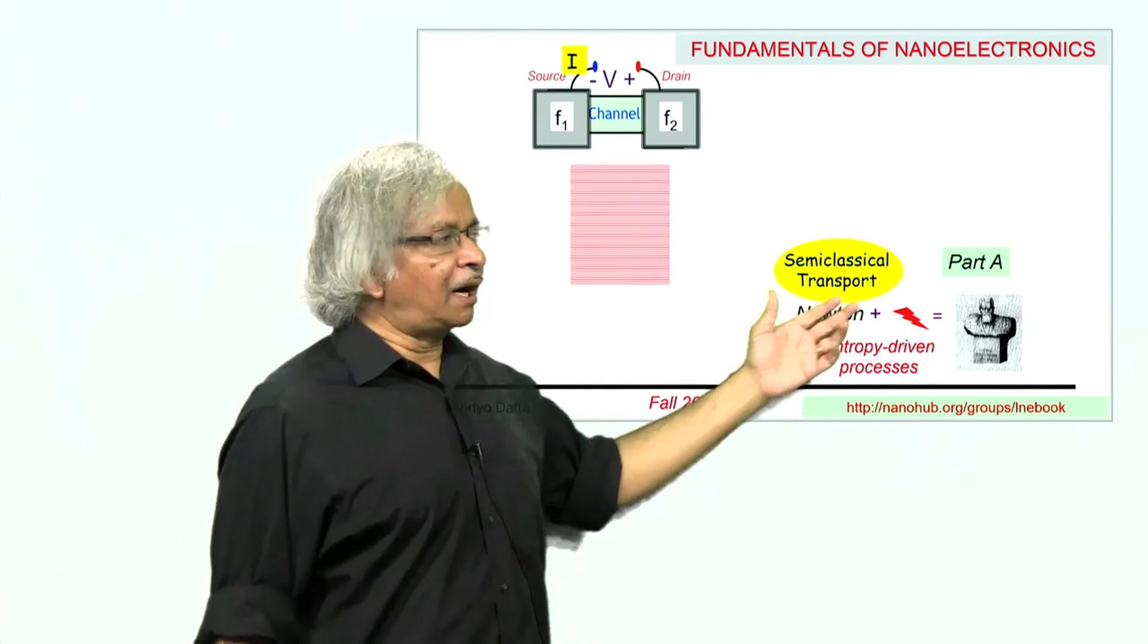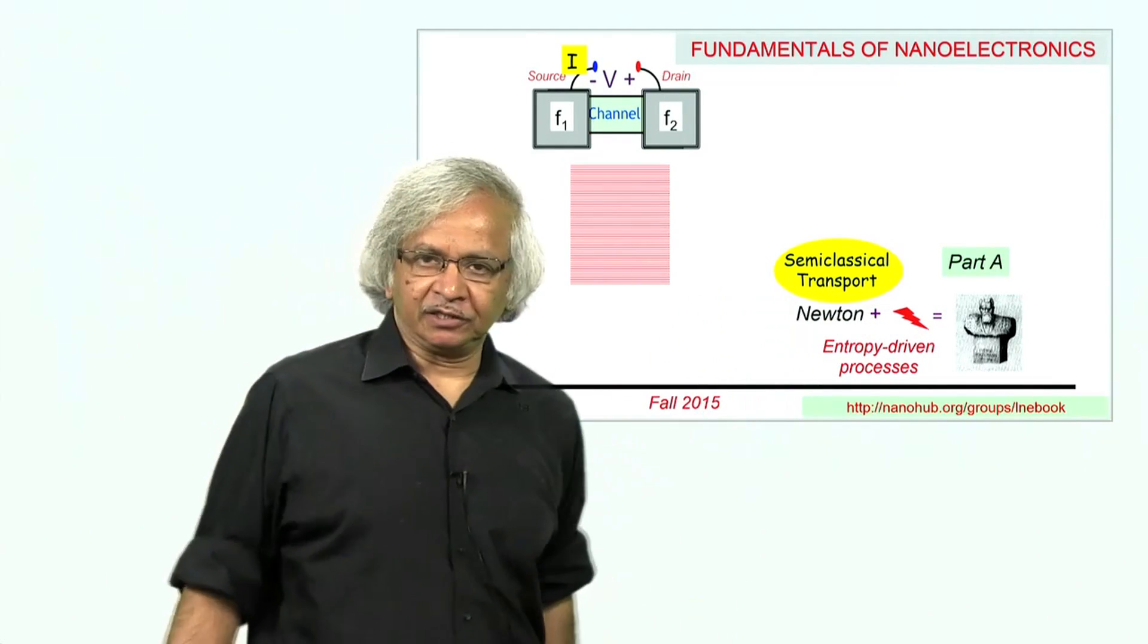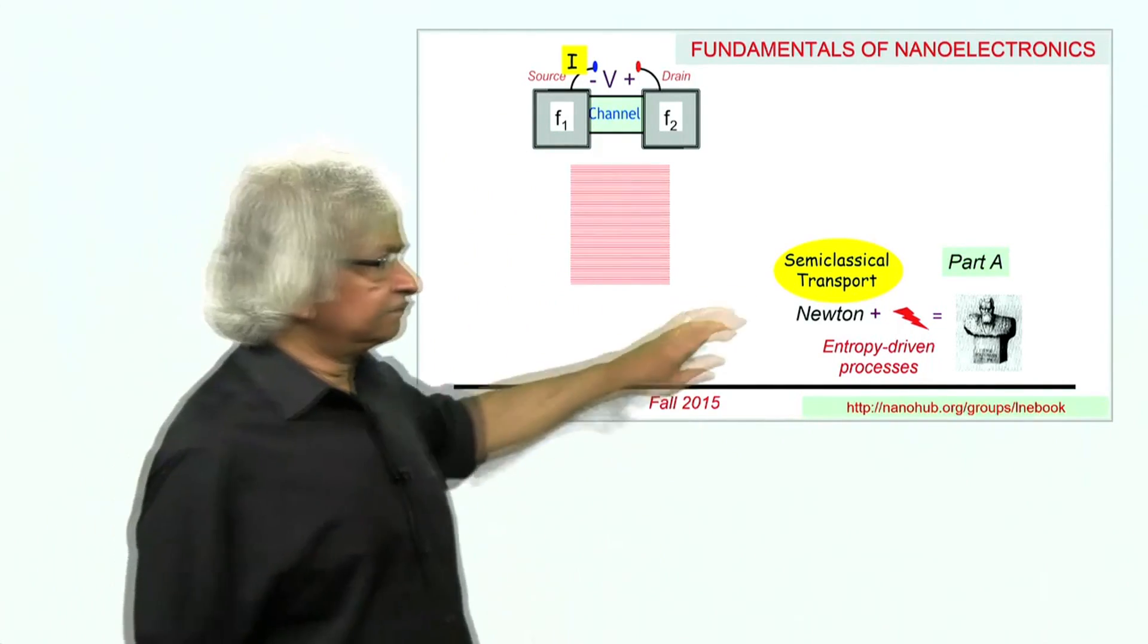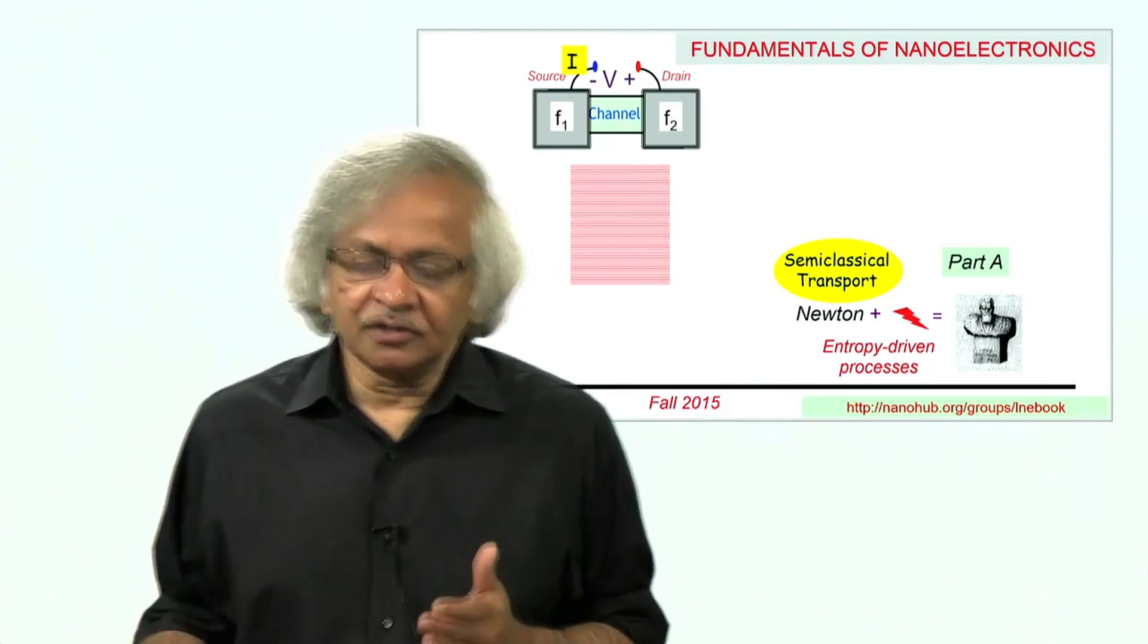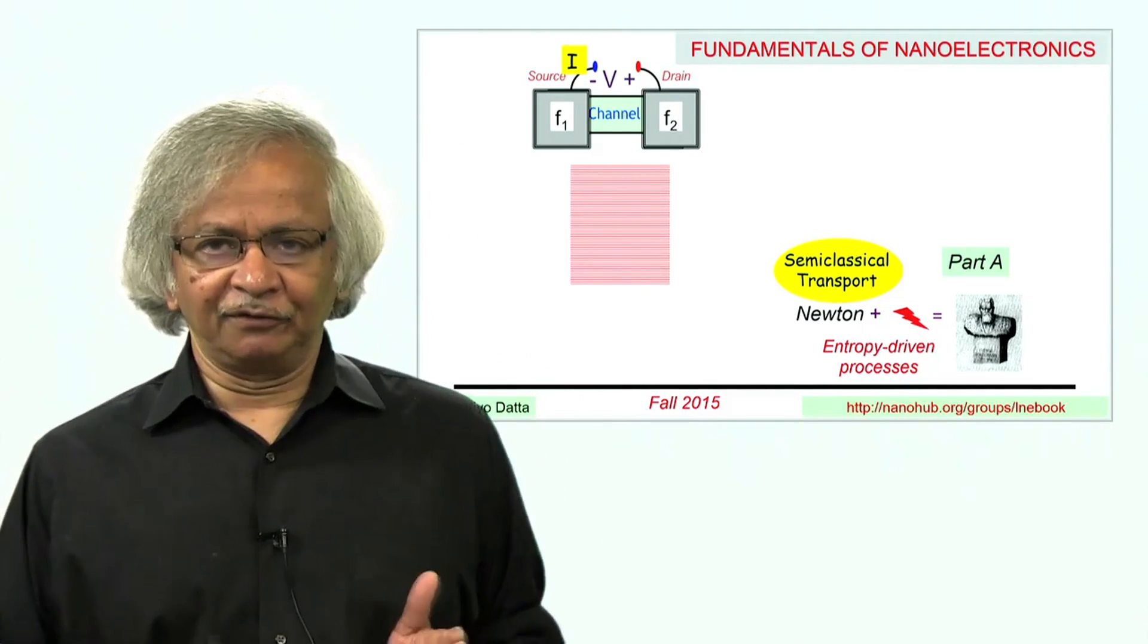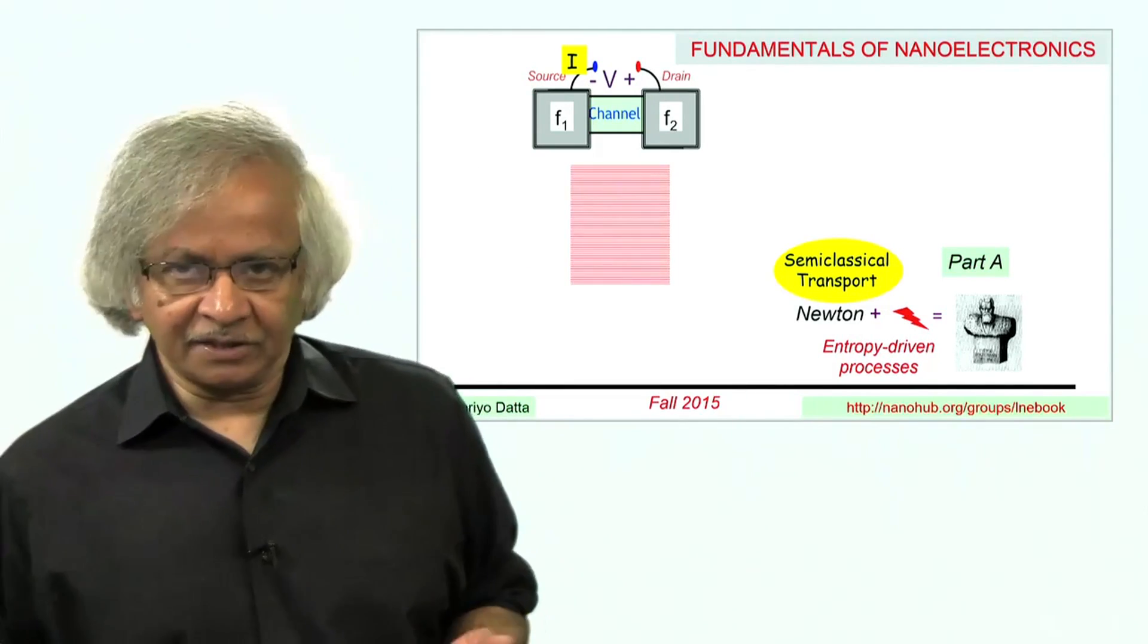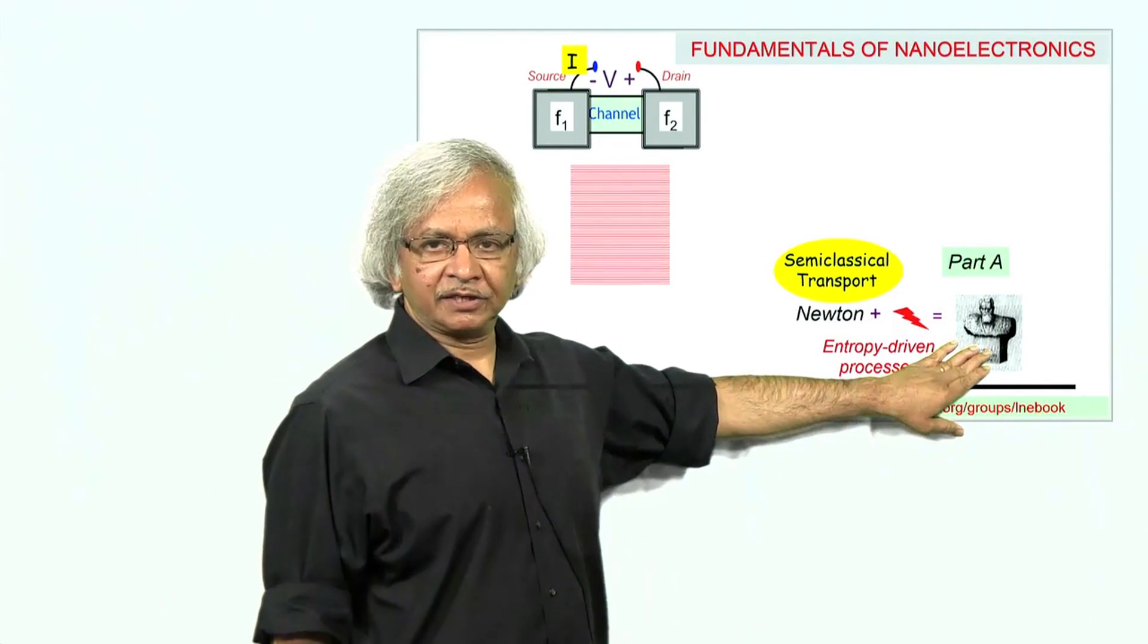In Part A, we used the semi-classical picture, where you think of electrons as particles described by Newton's laws. But to describe current flow, you also have to include entropy-driven or thermodynamic processes. The general framework for doing that is the Boltzmann equation.